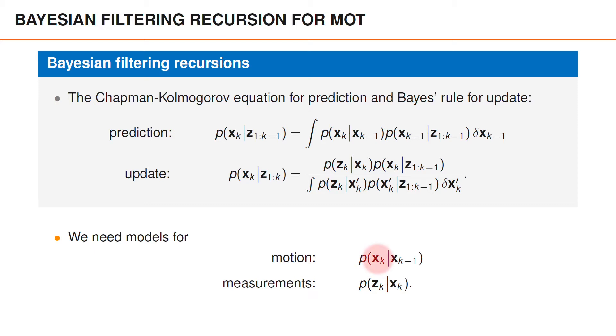Since the state is now a set, the motion model does not only capture how the state vectors change, but also the probability of events where new objects appear in the area of interest, which means that new vectors are added to the set. The motion model should also describe the probability of events where objects disappear and are removed from the set.